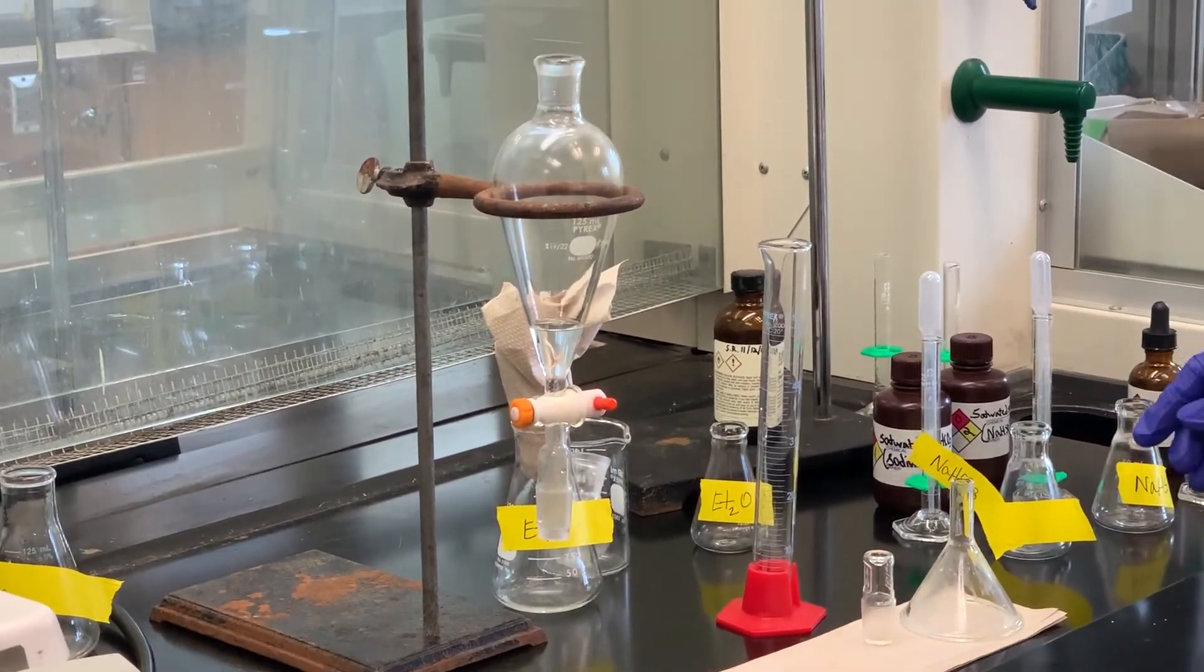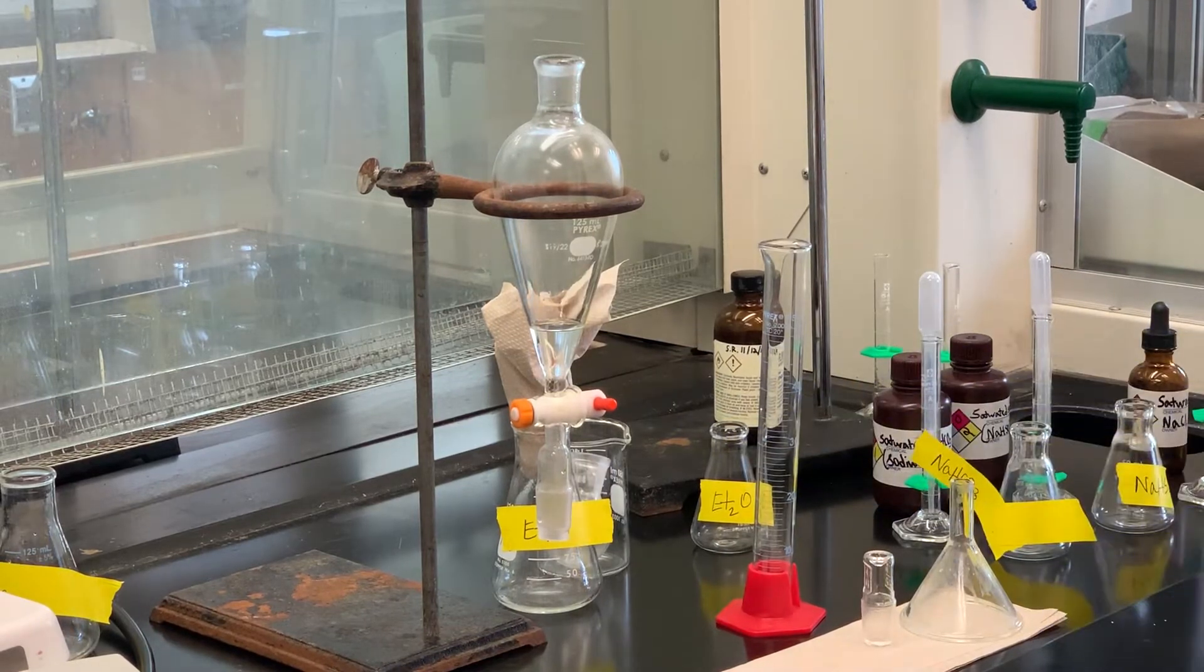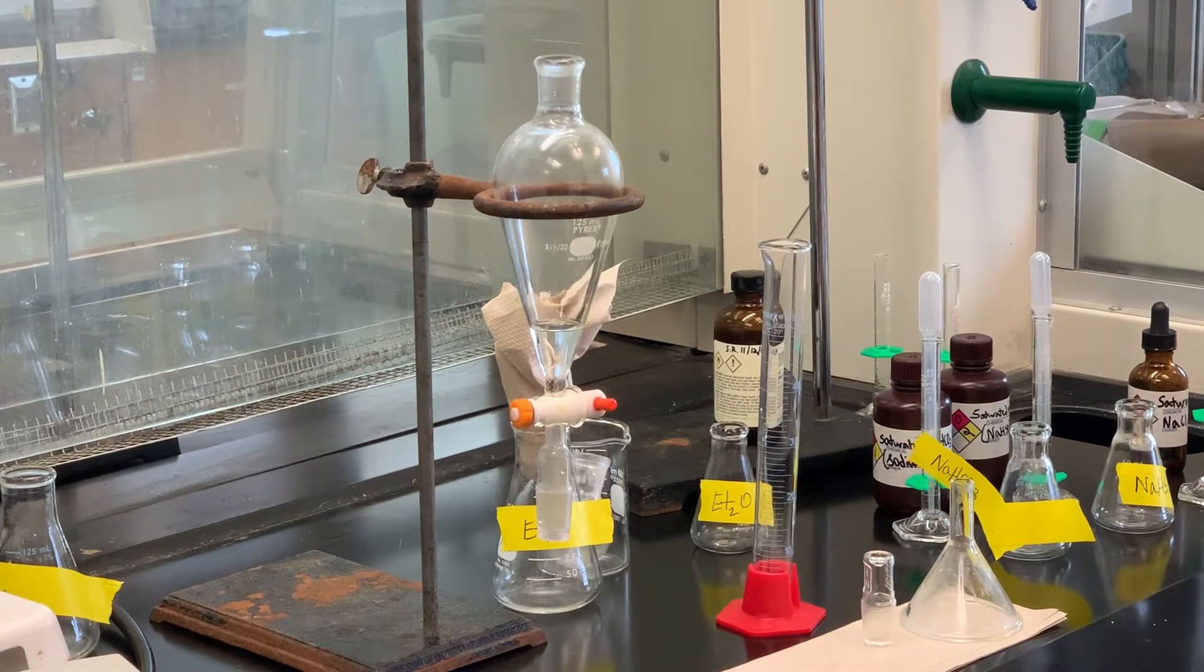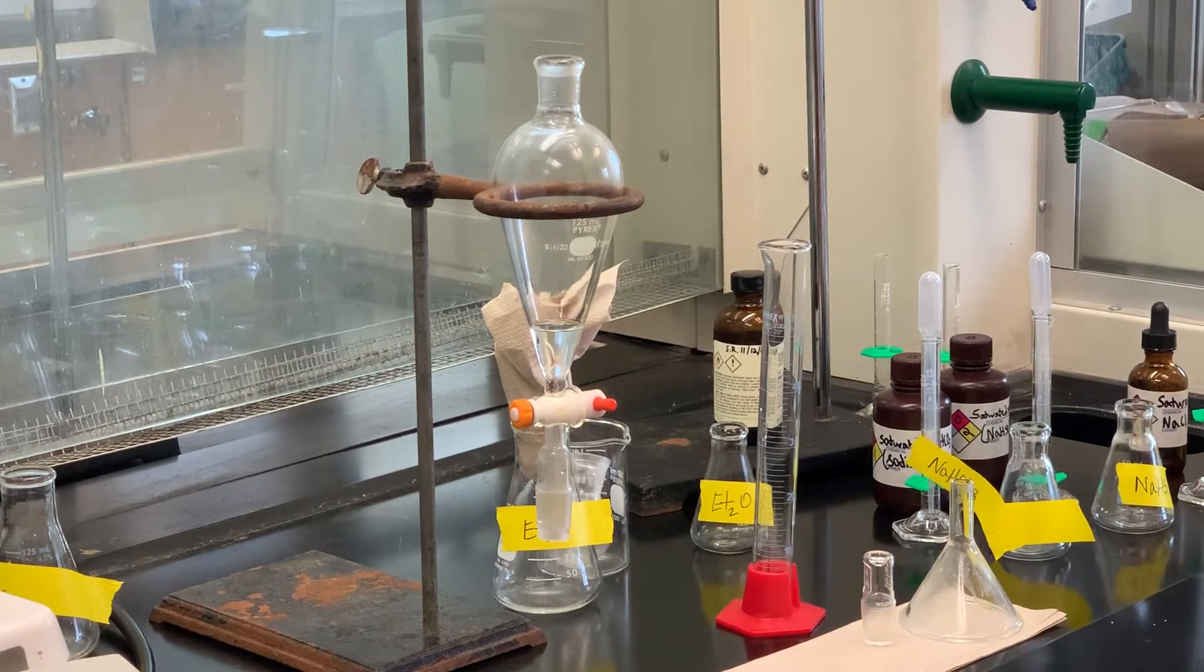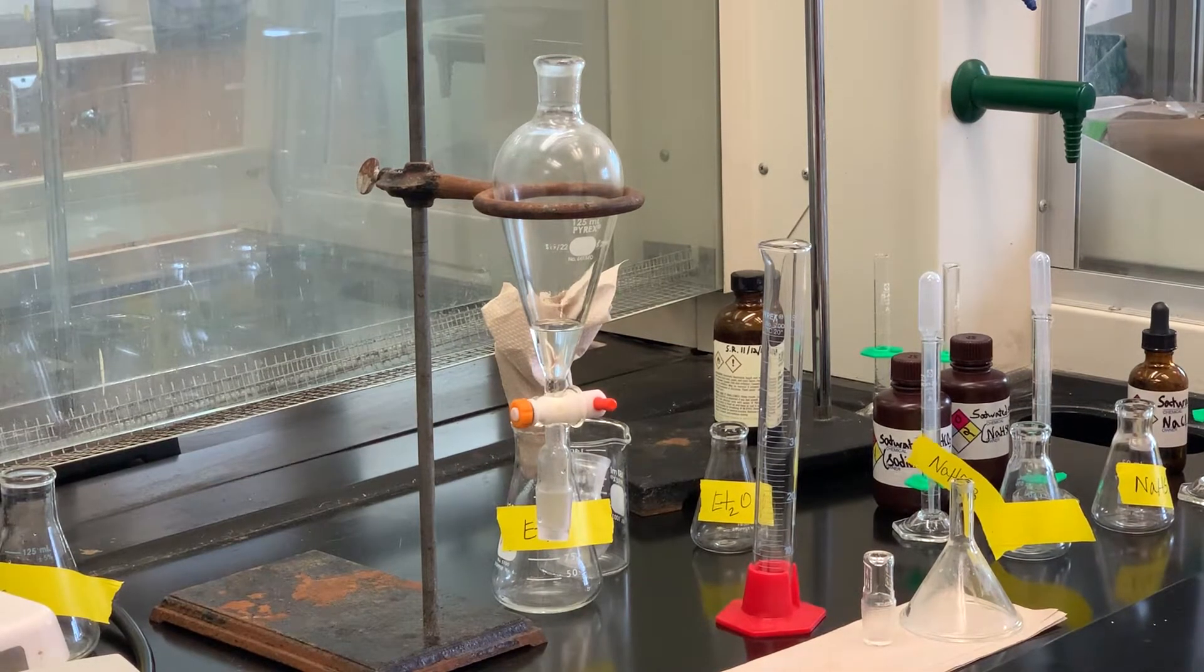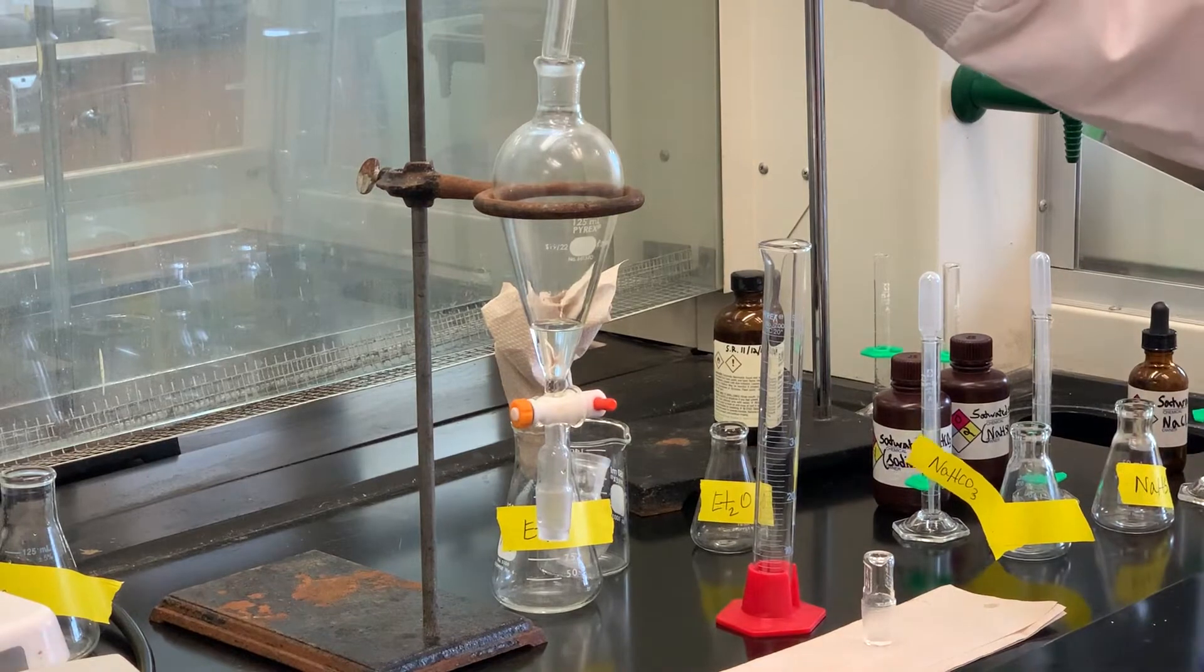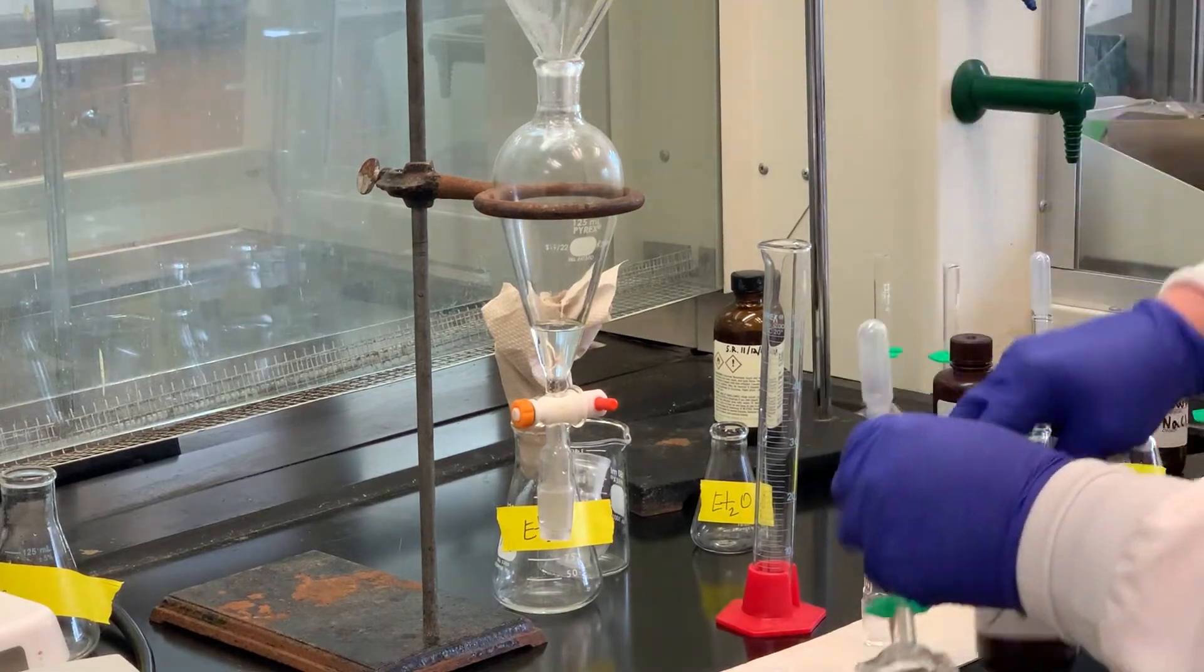So now what we're going to do is it goes through a series of washing. We're going to wash this organic layer with some sodium bicarbonate. That hopefully will neutralize any acid from the acetic acid that was left over. So we'll wash it with that. We'll separate the layers. All of the solutions are aqueous-based. The sodium bicarbonate, the sodium bisulfite, the saturated sodium chloride, they're all aqueous-based. So when we add them to this separatory funnel, the aqueous layer should go to the bottom in this case.